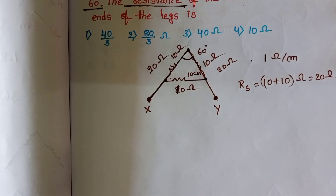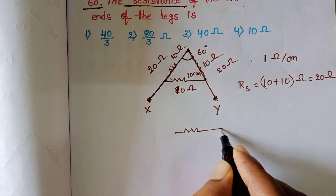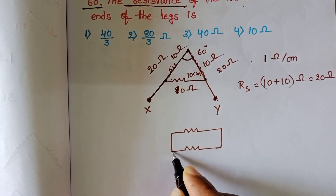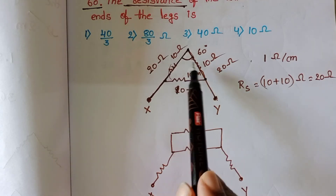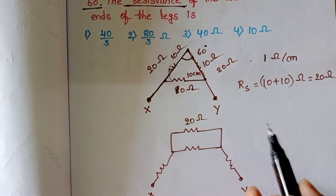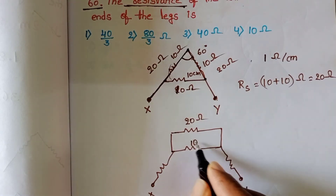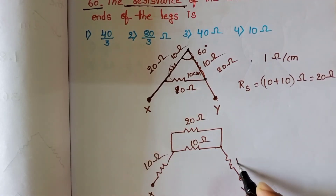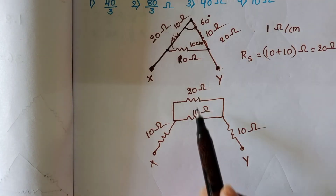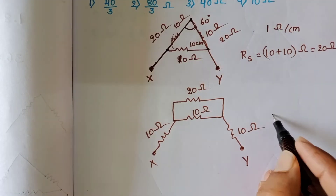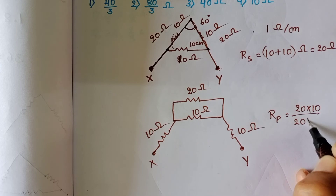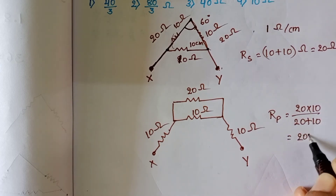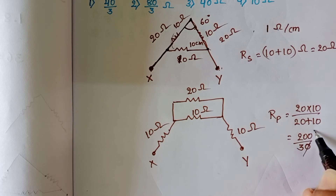The circuit now shows a 20 ohm resistor connected in parallel with the 10 ohm cross piece. The parallel combination is (20 × 10) / (20 + 10) = 200 / 30 = 20/3 ohm.